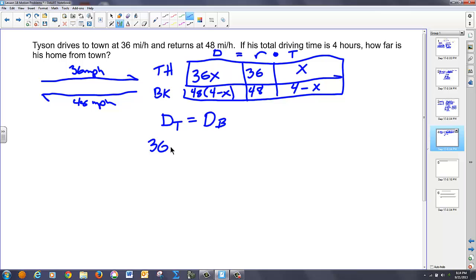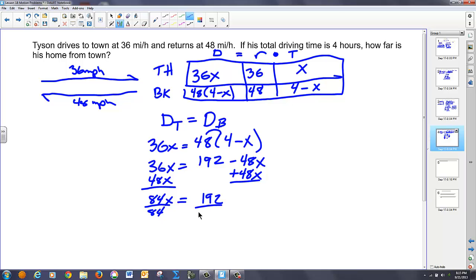So, 36X equals distribute, I get 192 minus 48X. I'm going to get all my X's to one side, so add 48X to both sides. We have 192 is equal to 84X. Divide 84 to both sides. I take 192 and divide that by 84. I get a decimal. I'm going to round it. So, let's go 2.29 and that ends up being hours.